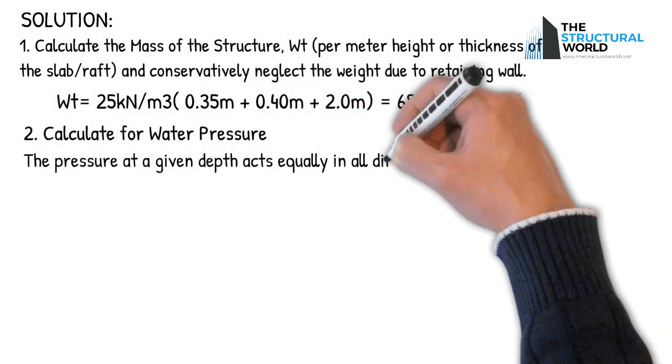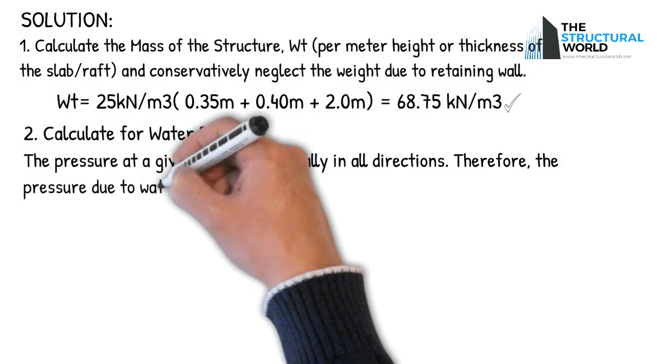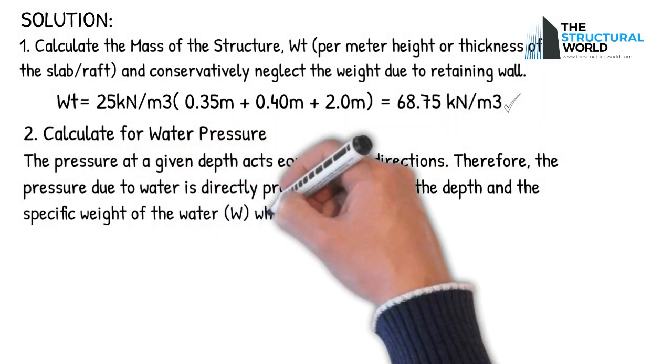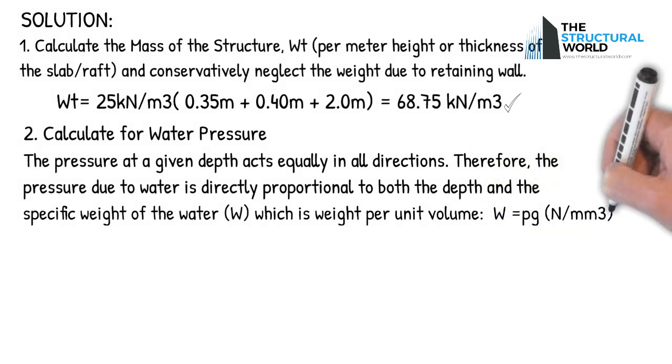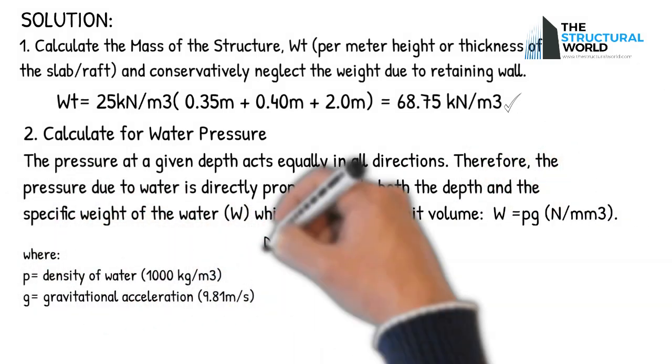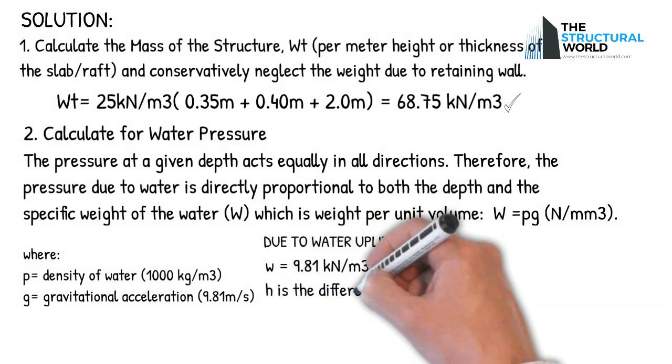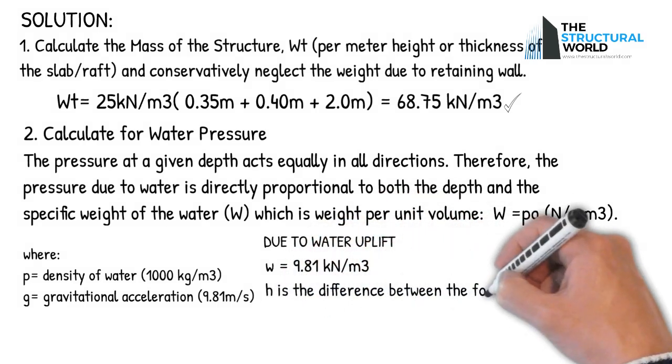Solution 2: Calculate for water pressure. The pressure at a given depth acts equally in all directions. Therefore, the pressure due to water is directly proportional to both the depth and the specific weight of the water, which is the weight per unit volume expressed in newtons per cubic millimeter. Refer to the following calculations as shown.